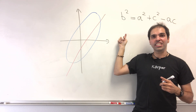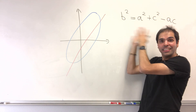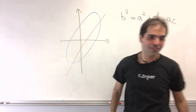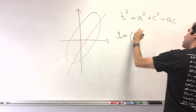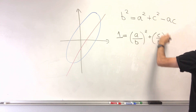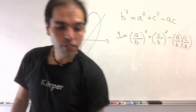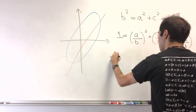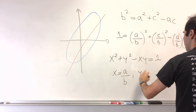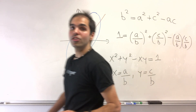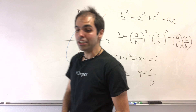In other words, infinitely many integers that satisfy b² = a² + c² minus a correction term. This turns out to have to do with ellipses. First, divide both sides by b², and we get 1 = (a/b)² + (c/b)² − (a/b)(c/b), which we relabel as x² + y² − xy = 1, where x = a/b and y = c/b.